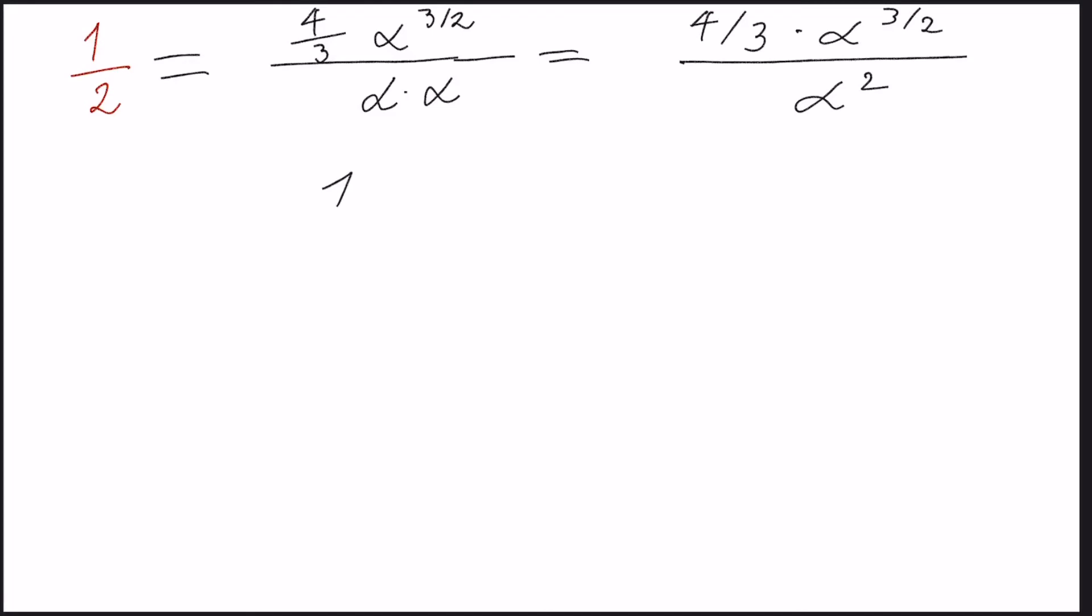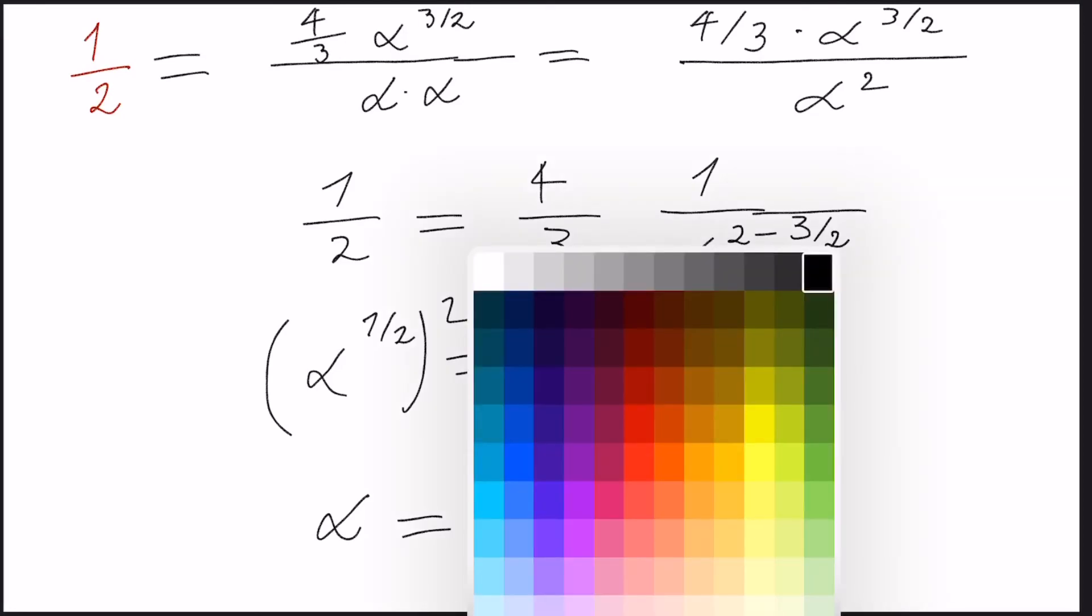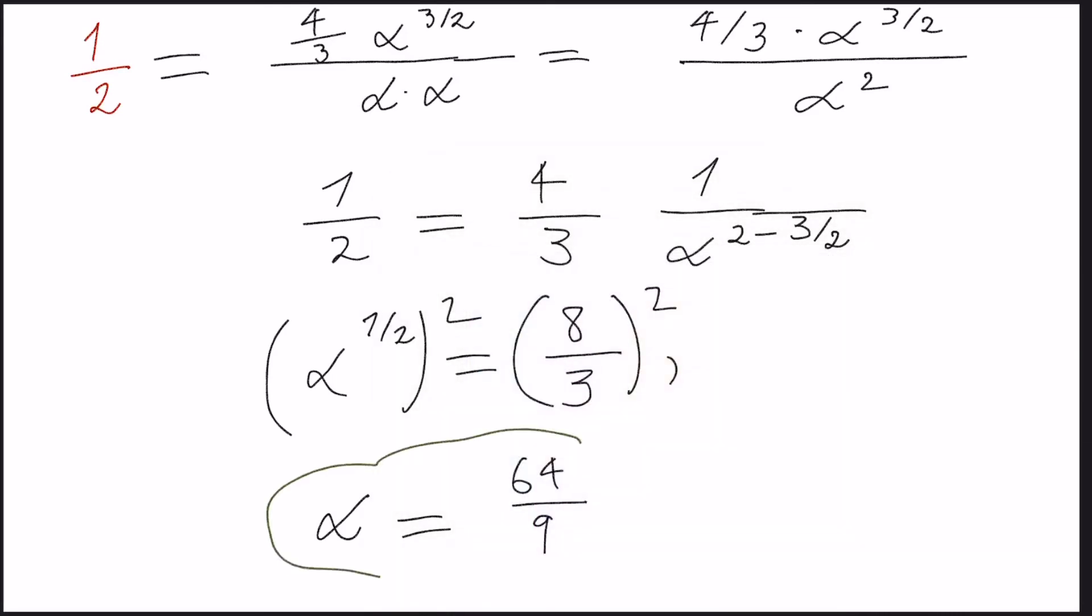So we have finally 1 divided by 2 is equal to 4 divided by 3. Here we make some algebra. So in the denominator, 3 divided by 2 minus 2 equals 2 minus 3 divided by 2. And now we just arrange a little bit. So we have alpha to the 1 divided by 2 equals 8 divided by 3. Finally, we just square both sides, and we will obtain that alpha, remember alpha was a positive number so it's okay, is equal to 64 divided by 9. And this is the value that makes us obtain real solutions with probability equal to 1 divided by 2.